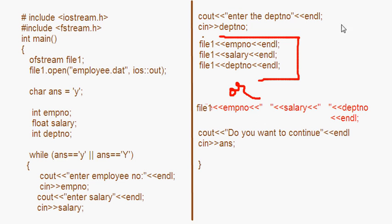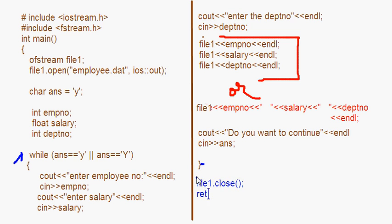So the second employee's data will go into the file, then the third, and this way it continues. When the user doesn't want to continue, they enter some character other than y, such as n or any other letter, and the loop will stop. Once this process is completed, you have to close the ofstream object by writing file1.close(). Then finally return 0 — that is the end of the program.